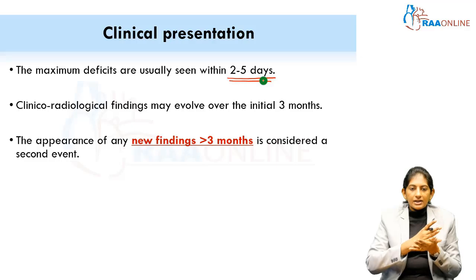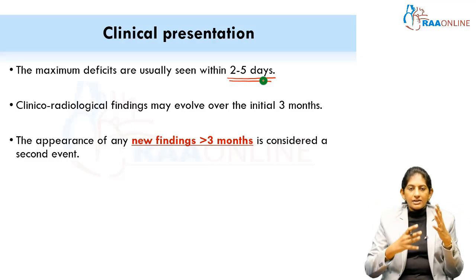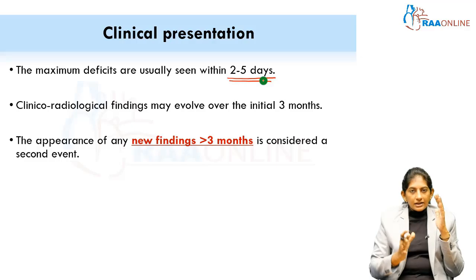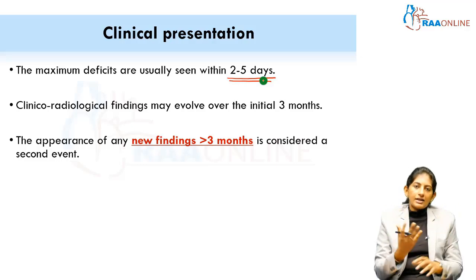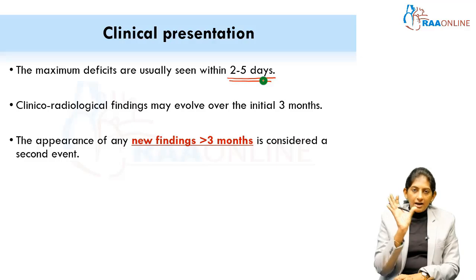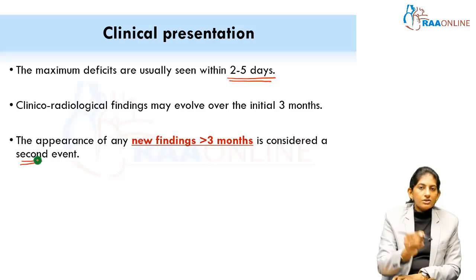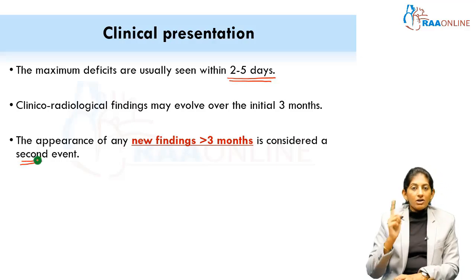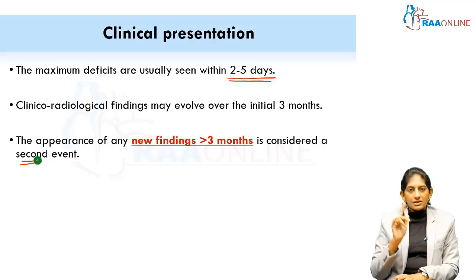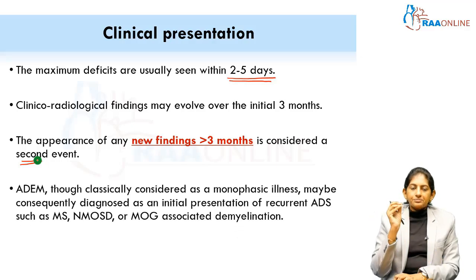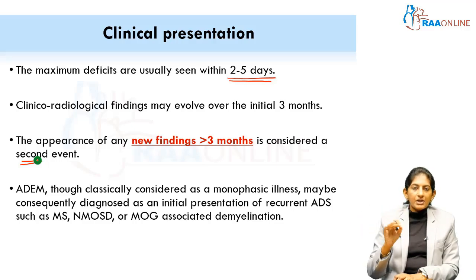In the first three months from onset, clinical and neurological findings can evolve, then disappear or gradually resolve. After three months, any new finding is considered a second event — that would be polyphasic ADEM, not the first event. Most often ADEM is monophasic, just a one-time event. After three months it is classified as a second event.